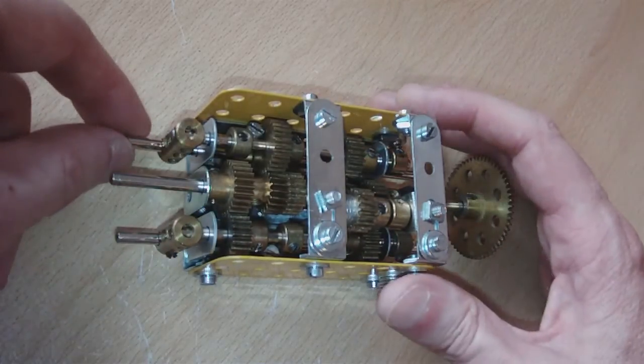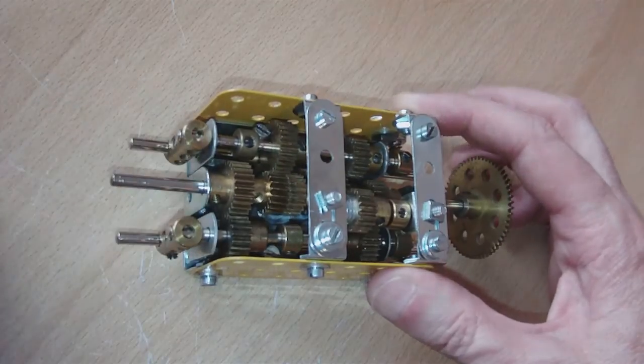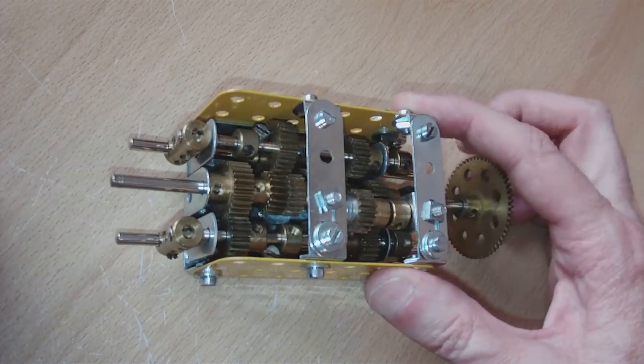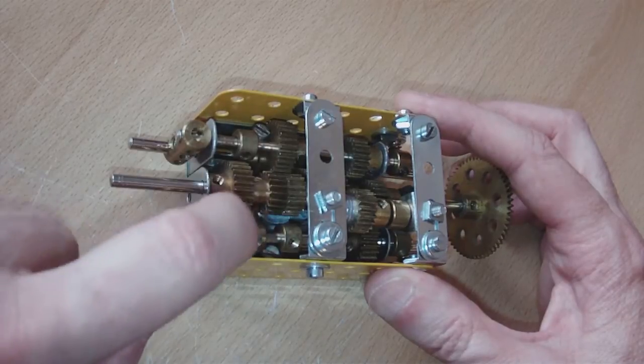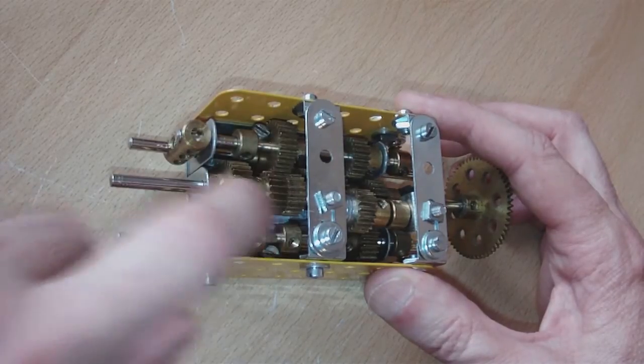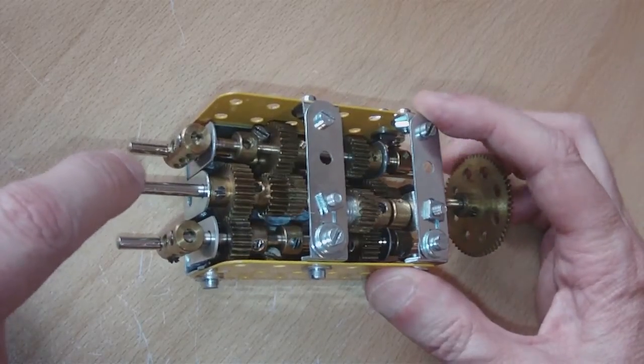Move that into neutral, and now we move that over. Now this is 1 to 1. So that 19 tooth gear goes to that 25 tooth gear, then goes straight out to that 19 tooth gear again. So that's 1 to 1.